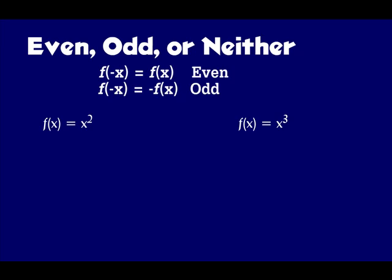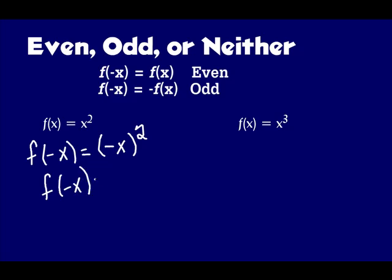Let's use algebra to determine if these functions are even, odd, or neither. To do that, we need to put negative x in for x. So I'm going to have f of negative x equals — everywhere I have an x, I put parentheses and substitute negative x. Negative x squared is actually just x squared, so I come back with my original. That means it's an even function. Anytime I put negative x in for x and end up with my original, it's even.